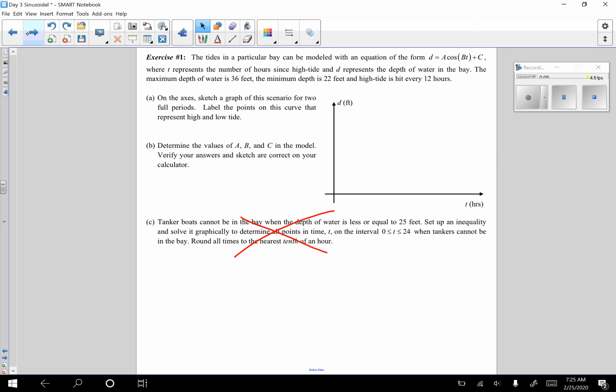So tides in a particular bay, the hell is a bay? Bay can be modeled, oh, bay. Bay can be modeled with an equation of the form d equals a cosine bt plus c. Okay, all of this is crap right now. I know that this is a cosine graph. Cosine to refresh your memory doesn't start at zero. It starts at one, drops down, comes back up. Okay, that's the basic premise of cosine. So it says the maximum depth of water is 36 feet. So I know that somewhere on this height, this is my height, somewhere here at the top, near the top, it's going to be 36. The minimum depth is 22. So I can't put that here because that's like zero. So I'm going to be like, eh, there's a break in the graph somewhere. And then 22 is somewhere right about here. Obviously, this is a sketch, guys. A sketch. Okay.